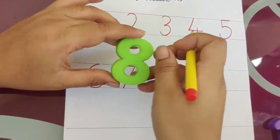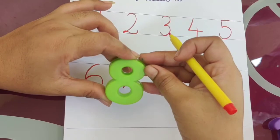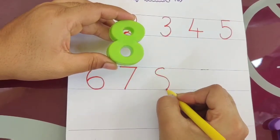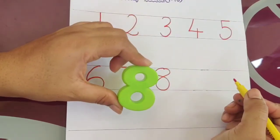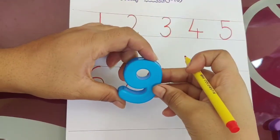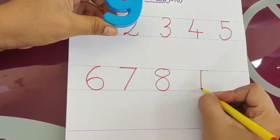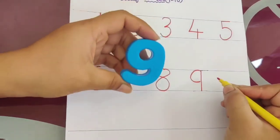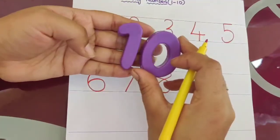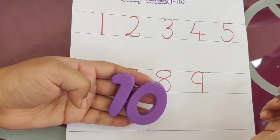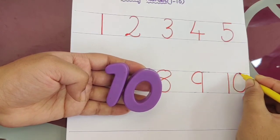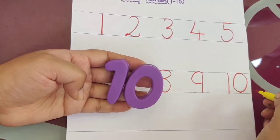Then comes — what number is this, children? 8. How do you write 8? What number is it? 8. Then comes — what number is it? 9. How do you write it? 9. This is number 9. And the last one — what number is this? 10. Yes, after 9 comes 10. How do you write it? 10. It is a two-digit number. From here, two-digit numbers will start.